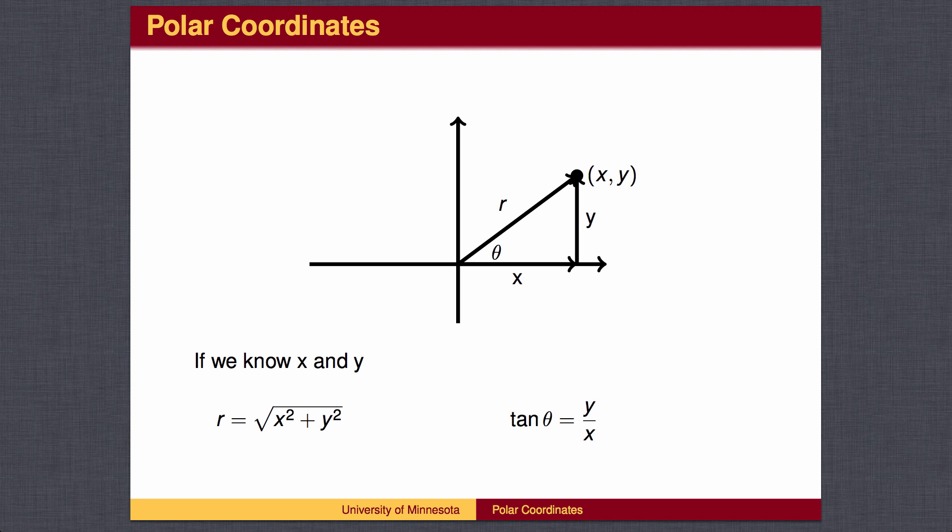You can then add that angle to 180 degrees if you are in the third quadrant, or subtract that angle from 180 degrees if you are in the second quadrant. This approach will also work if theta is in the fourth quadrant.